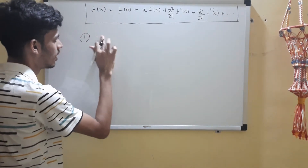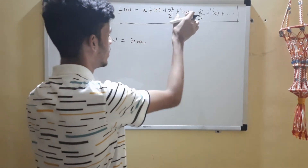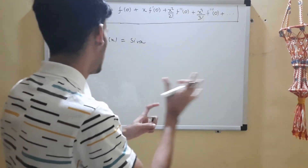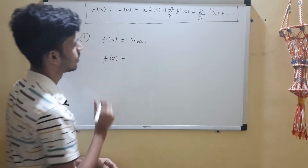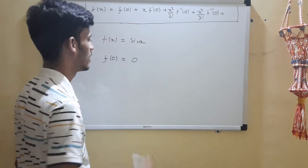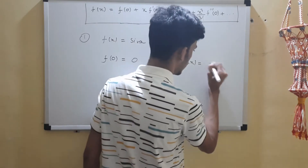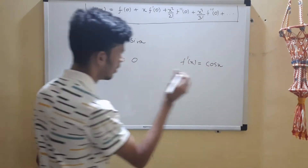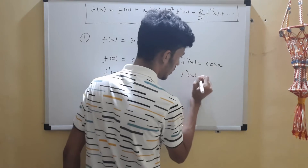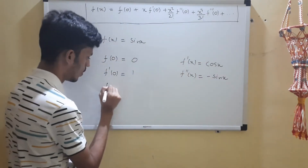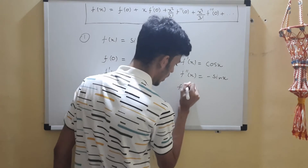Let's begin with f(x) equals sine x. We need to find f(0), f'(0), f''(0), and so on, to find a pattern. f(0) equals sine 0 equals 0. f'(x) equals cos x, so f'(0) equals cos 0 equals 1. f''(x) equals minus sine x, so f''(0) equals minus sine 0 equals 0. We keep differentiating until we see a pattern.